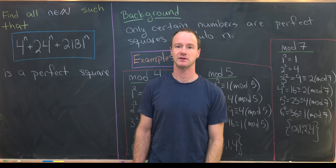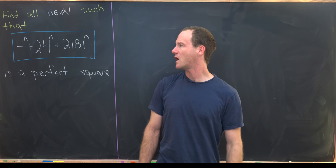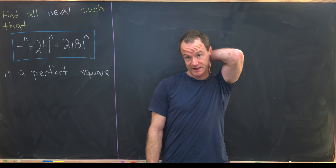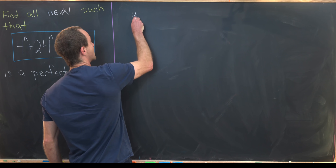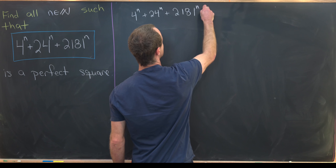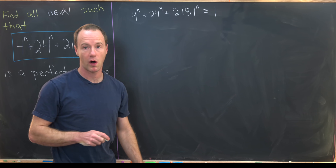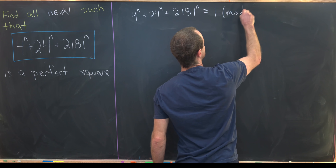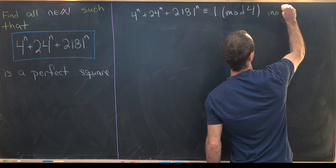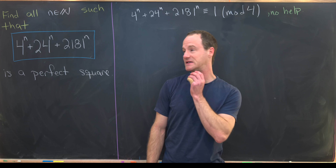Now let's jump into the solution. We'll start by reducing mod 4, since 4 and 24 are both multiples of 4. So 4^n + 24^n + 2181^n ≡ 0 + 0 + 1 = 1 mod 4. But 1 is a perfect square, so this doesn't help — no contradiction is reached, so reducing mod 4 is no help towards our solution.